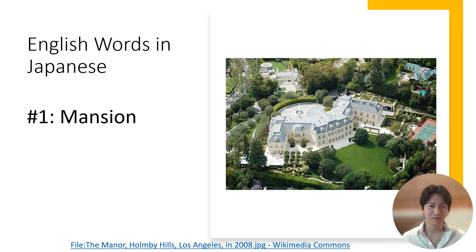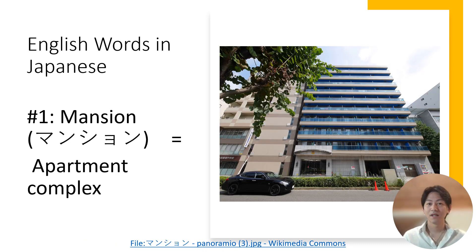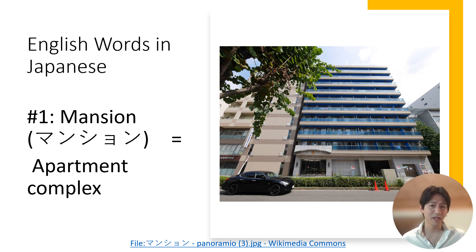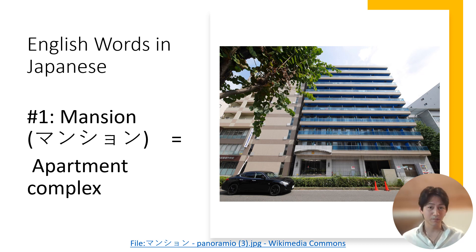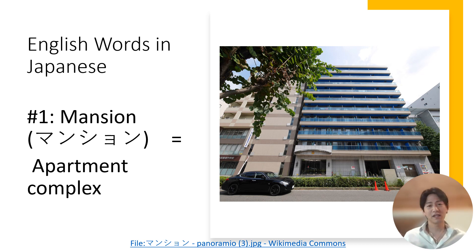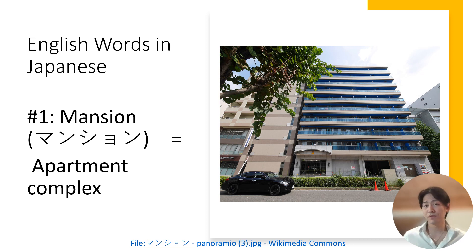But do you know what 'mansion' means in Japan? Surprisingly, if you use the word mansion in Japan, you're going to get a completely different meaning. Because in Japan, 'mansion' usually means your apartment complex — not your apartment room that you rent, but the entire building itself. Of course, you can see some similar notions in that both the English and Japanese words refer to a large building, but the similarity kind of ends there because there's nothing lavish about a particular apartment complex.